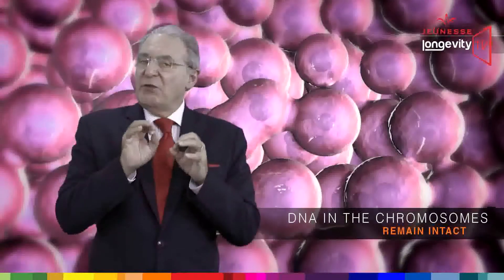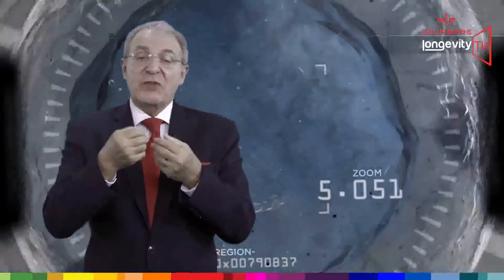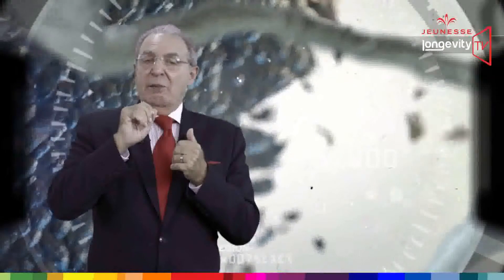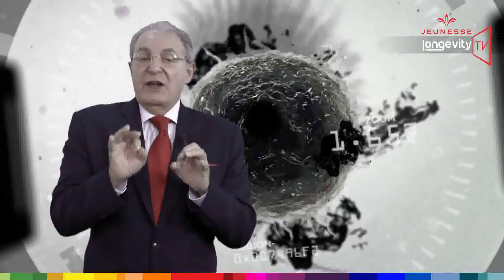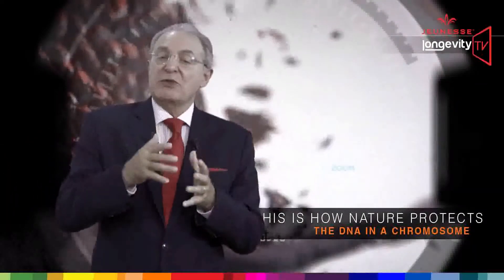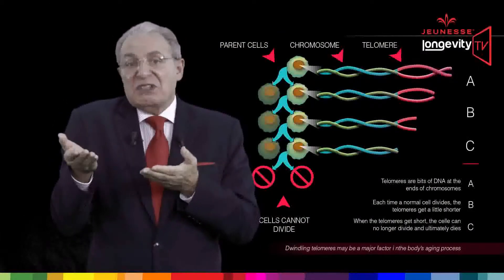When cells divide and multiply, it is very important that the DNA remain intact. If we lose a portion of the information in our DNA every time it is replicated, human life would just be impossible. So with every replication of our DNA, part of the telomere sequence is chopped off — but this really doesn't matter because we are losing the same repeated sequences of nucleotides.